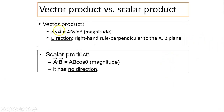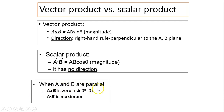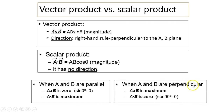Now let's compare vector product versus scalar product. For the vector product a cross b, the magnitude uses sine, while the scalar product uses cosine. Another key difference is that the vector product has direction, while the scalar product has no direction. The magnitude of the cross product can never be negative, but the dot product can be. When a and b are parallel, the cross product is zero because sine 0° and sine 180° are both zero. Conversely, the dot product is at its maximum or minimum. When a and b are perpendicular, a cross b is maximum because sine 90° equals 1, while the dot product is zero because cosine 90° equals zero.